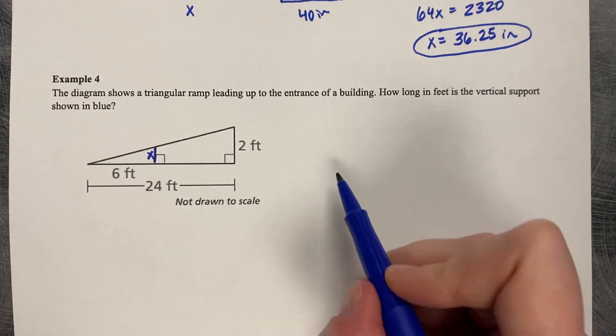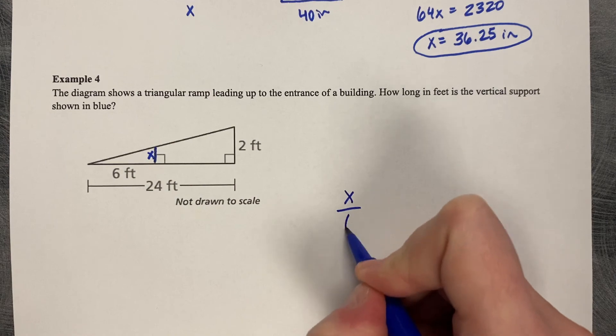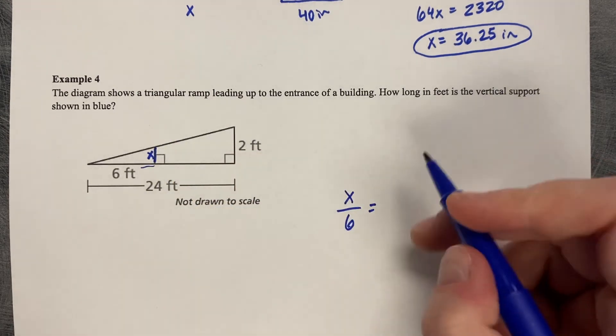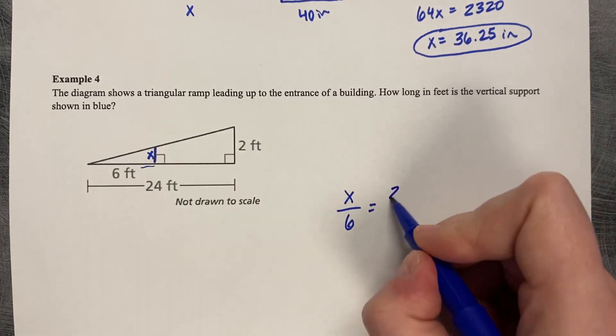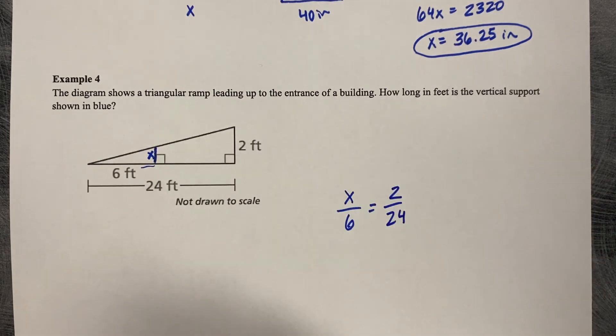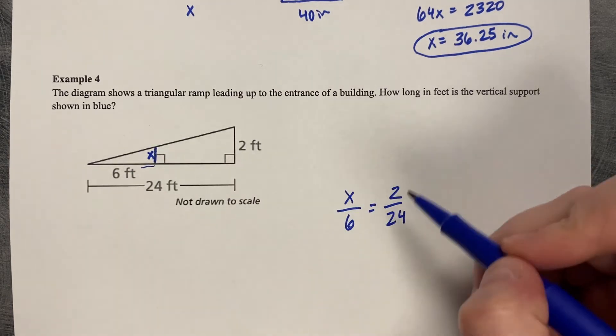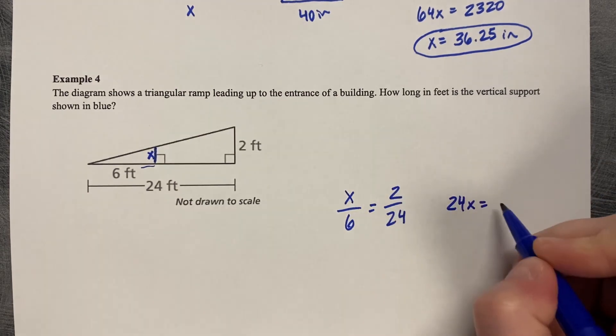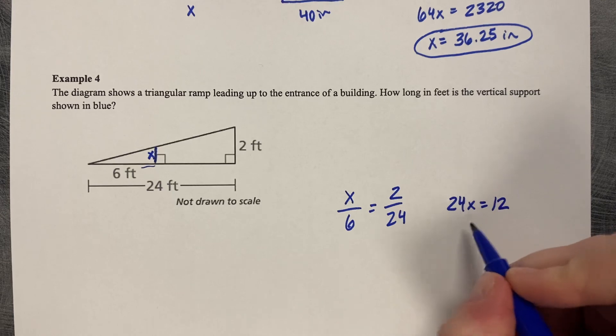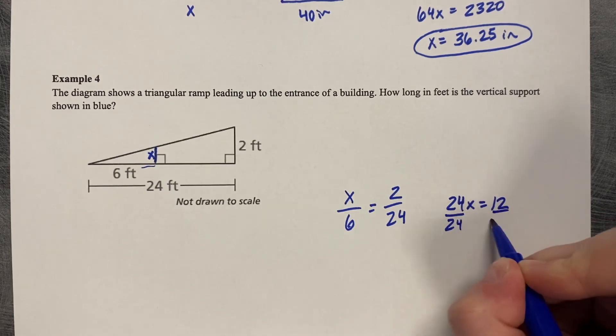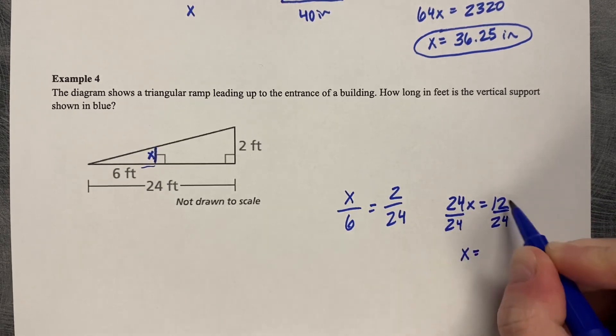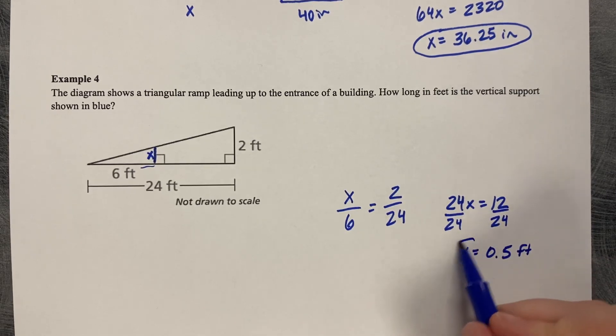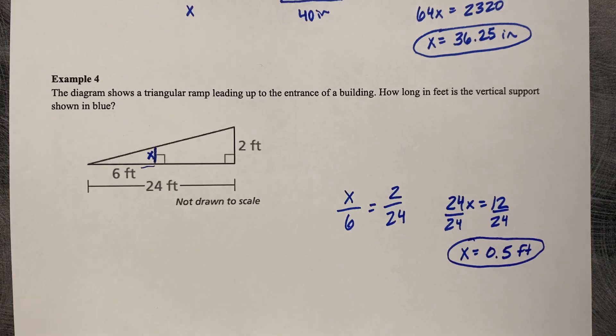So let's do the smaller triangle first. So the vertical support compared to six. That's the small triangle. And then that's compared to the big triangle. Two is to 24. Cross multiply. X times 24 is 24X. Two times six is 12. Divide by 24. And 12 over 24 is 1 half 0.5 feet. Thank you.